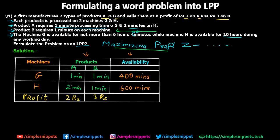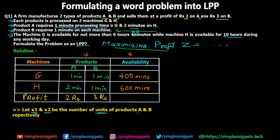Now we make an assumption: let x1 and x2 be the number of units of products A and B respectively manufactured in one single day by the firm. Depending on this assumption we can now formulate the profit equation. So the maximize equation is: maximize Z = 2x1 + 3x2. Z is the actual profit value — typically in LPP we use Z for this equation.